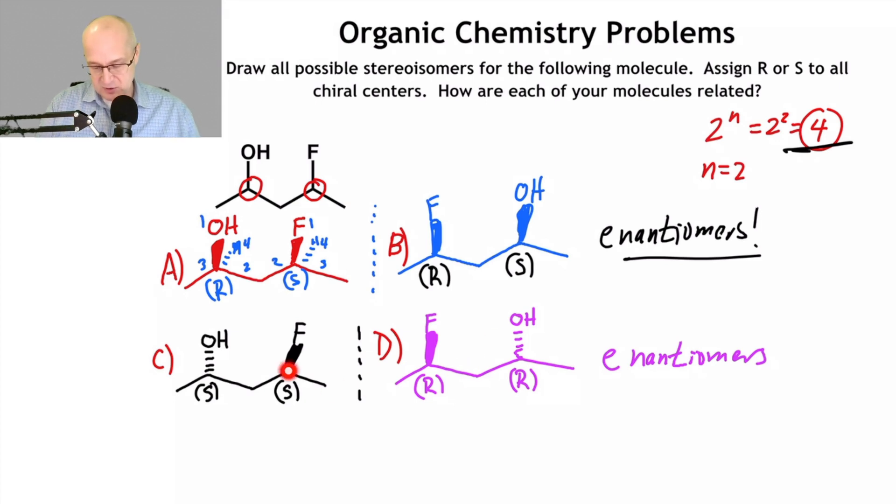So enantiomers, diastereomers. That's how it goes. So that's how you draw all four stereoisomers.